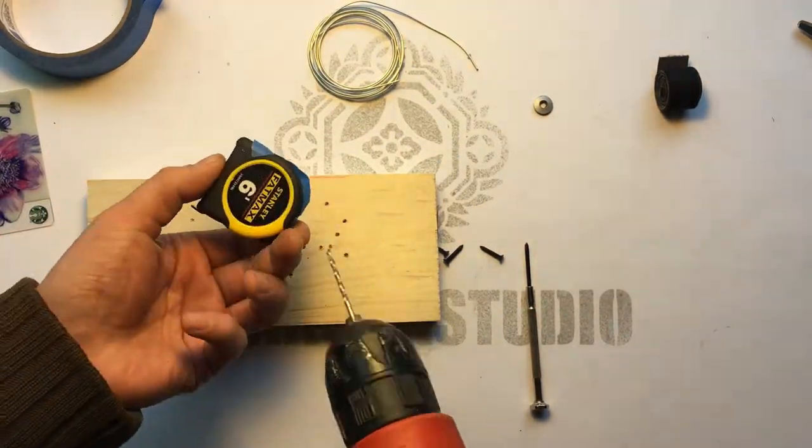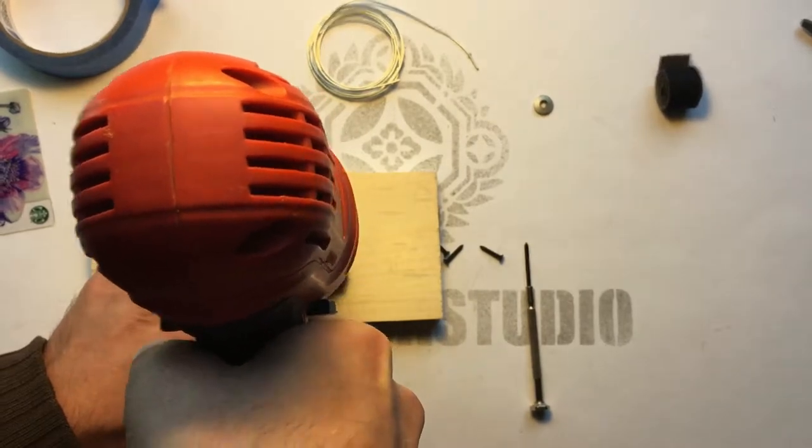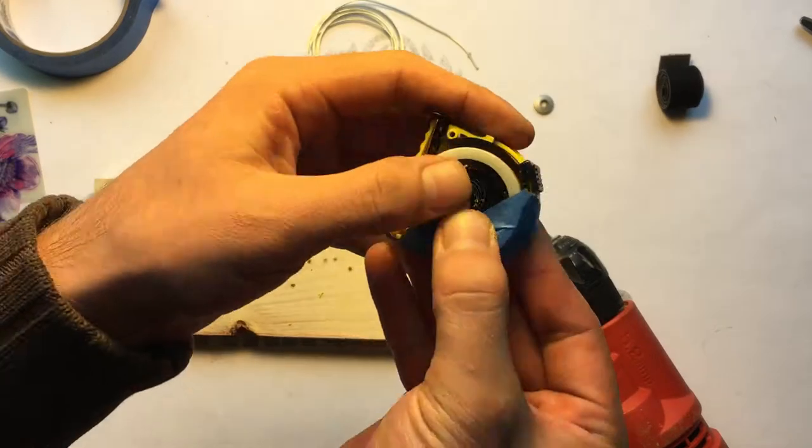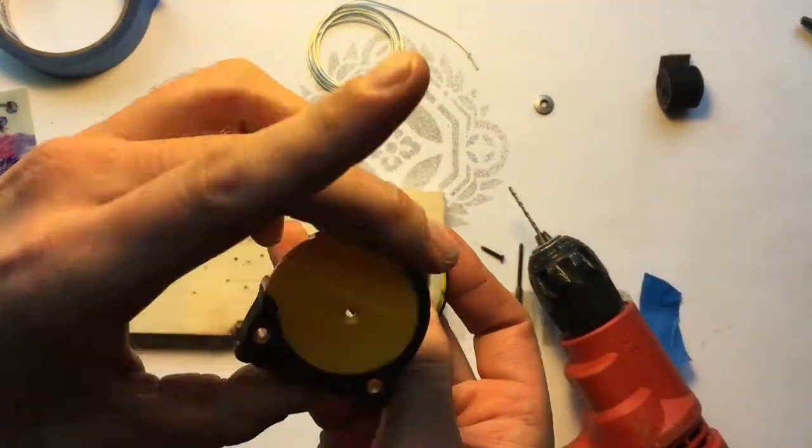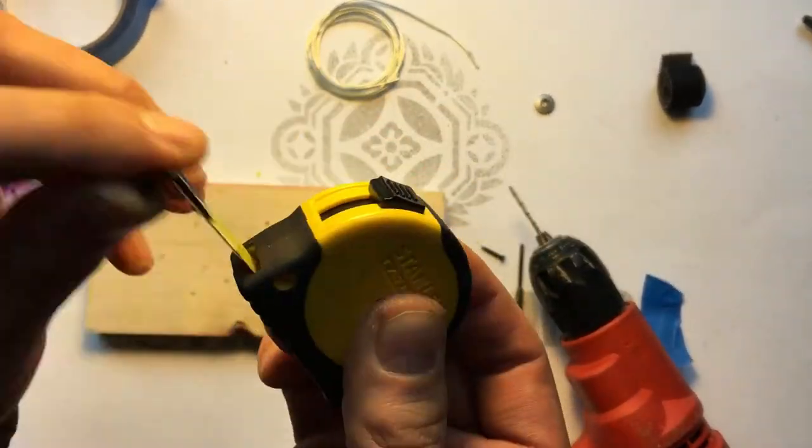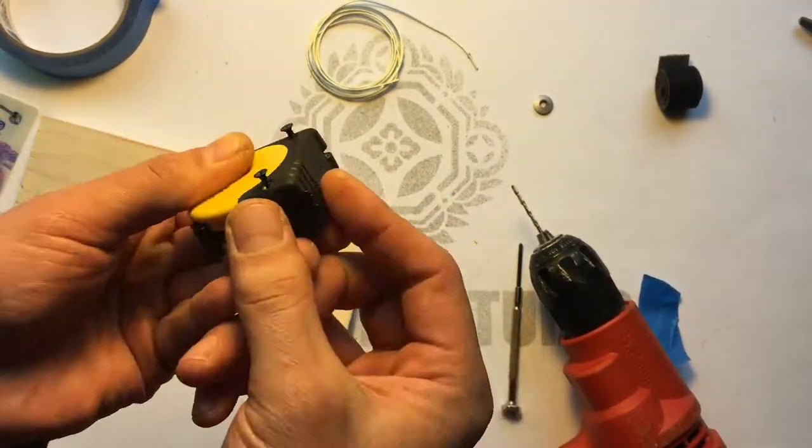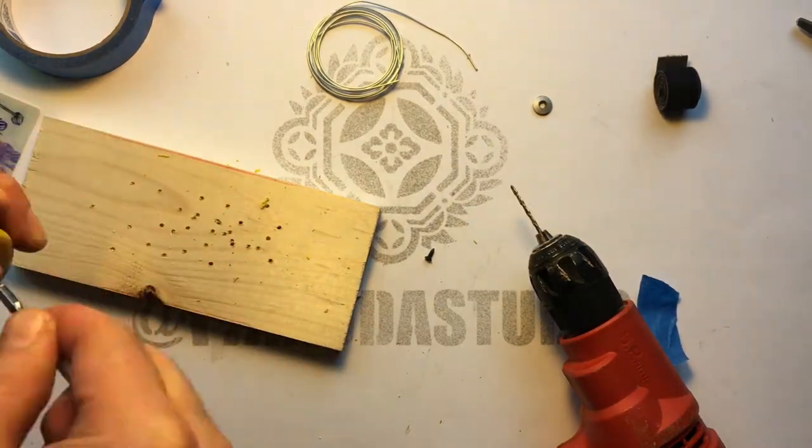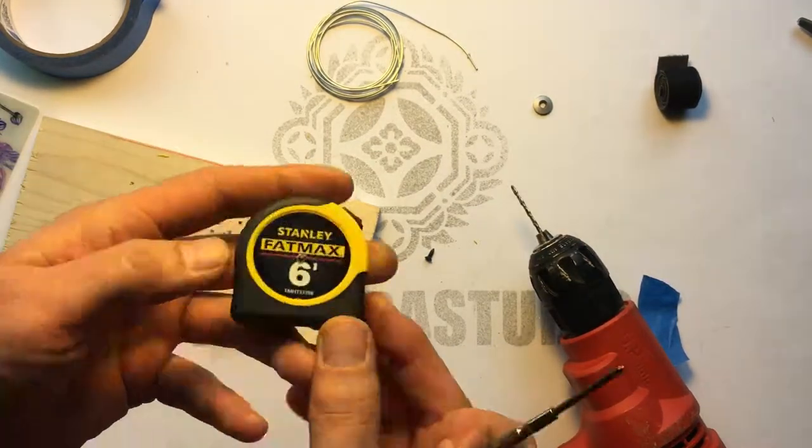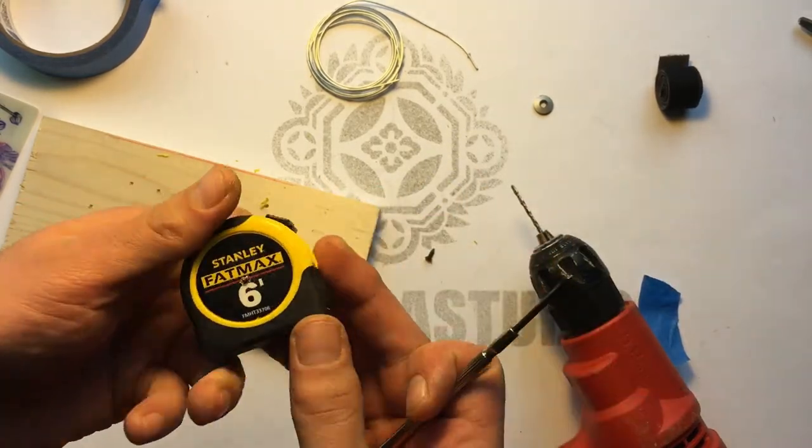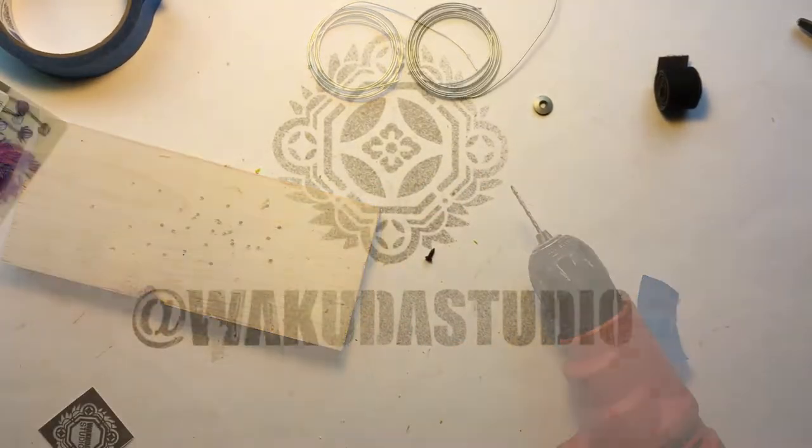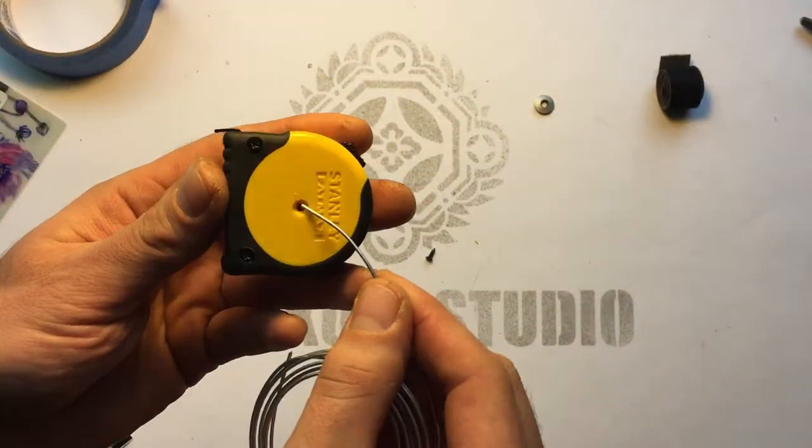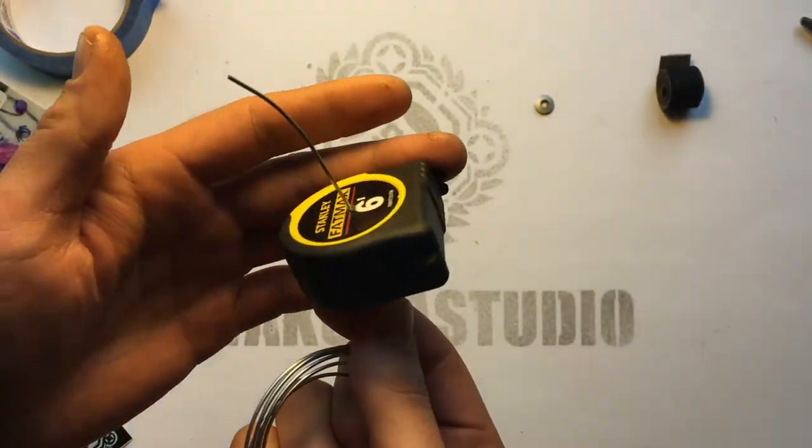And now we're going to take the main body of the tape measure and drill through the center screw hole. So we should be able to reattach everything now and actually see a clear hole through the very center. Okay we can see daylight through there that's fantastic and everything works. The wire goes through there very nicely.